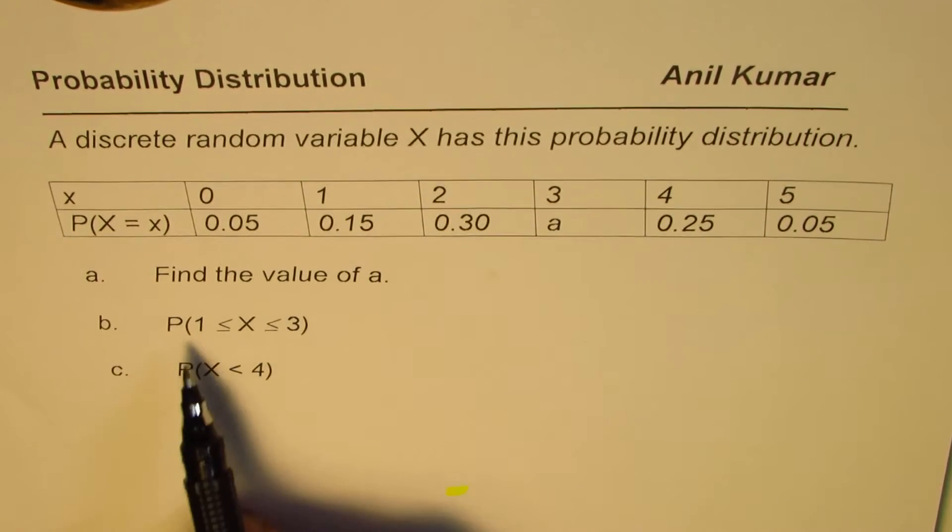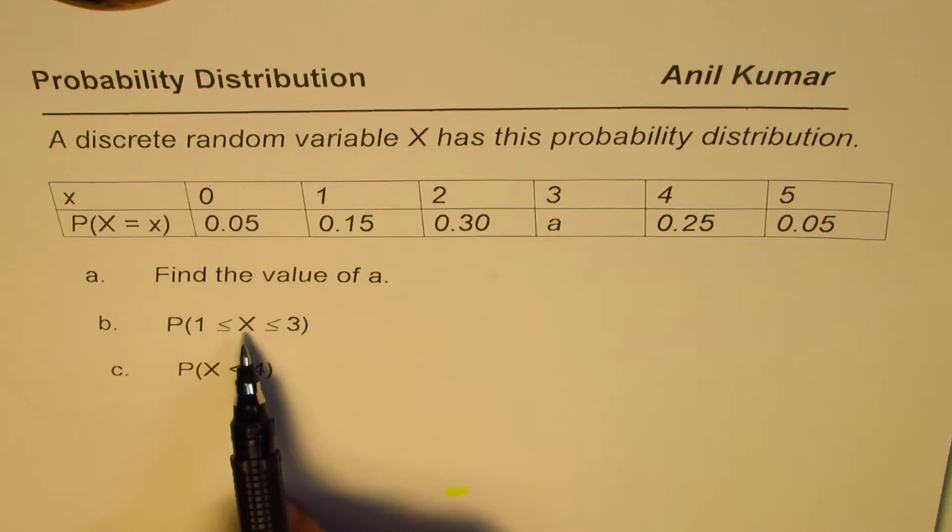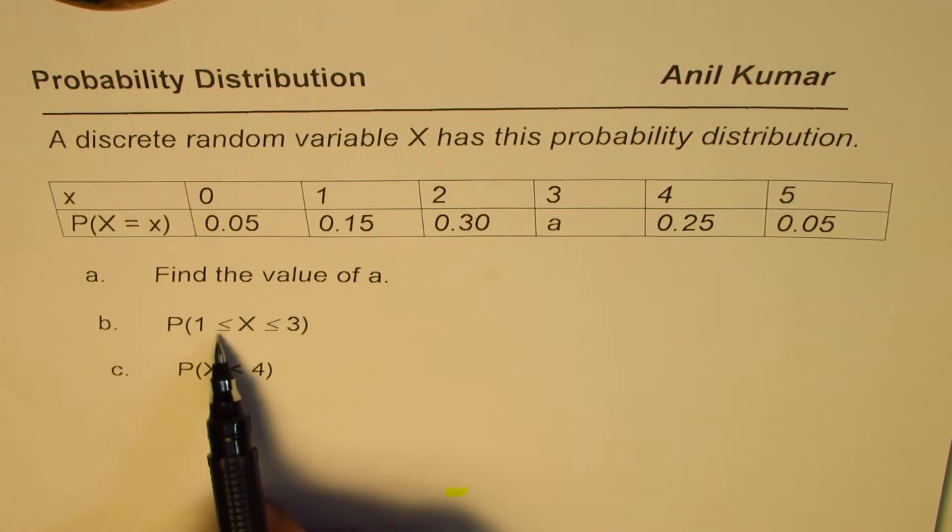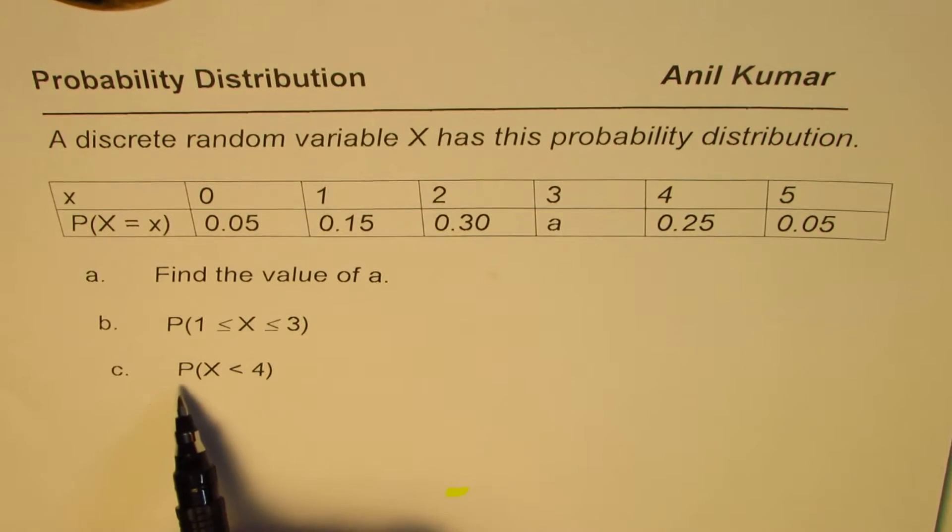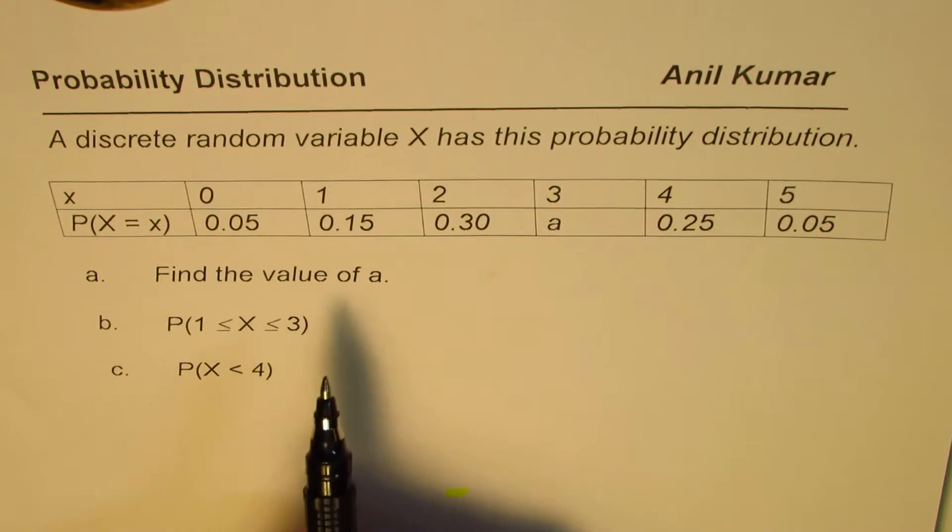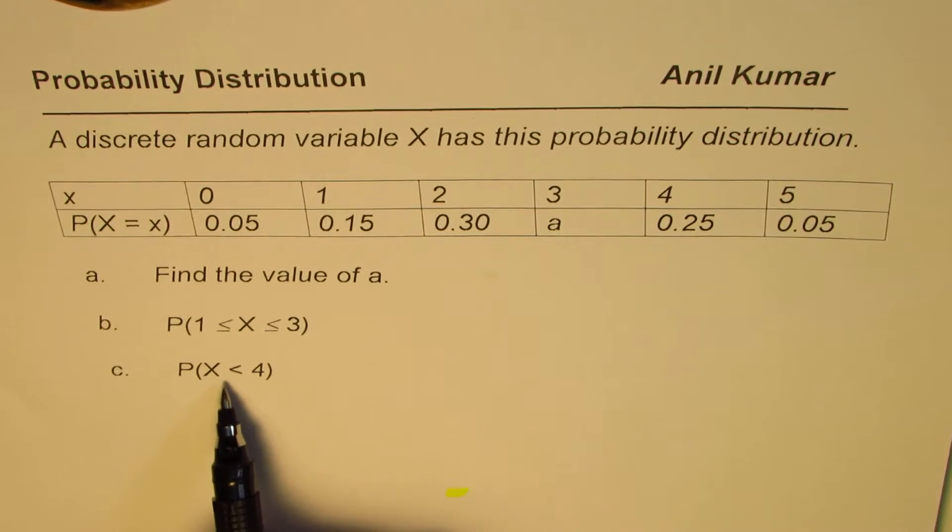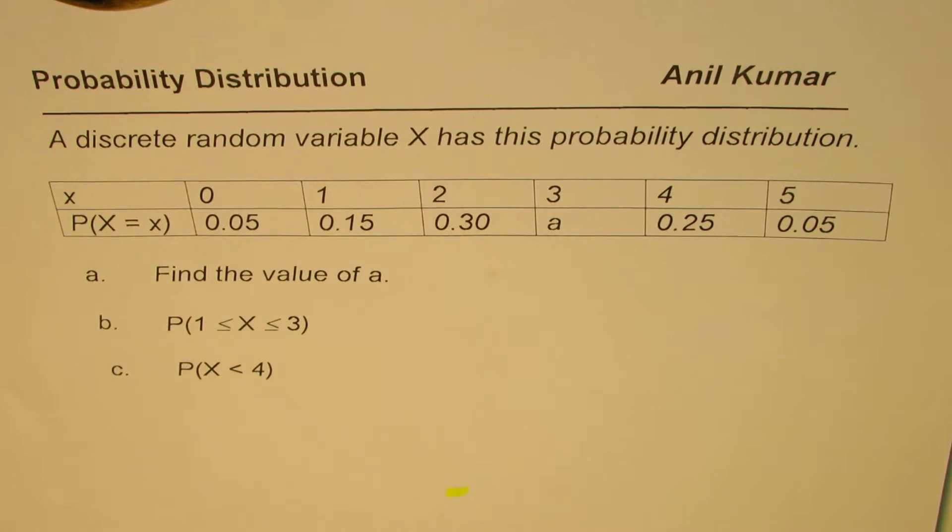The questions are: find the value of A, probability when X is greater than or equal to 1 and less than or equal to 3, and probability for the random variable distribution when X is less than 4. You can pause the video, answer the question and then look into my suggestions.